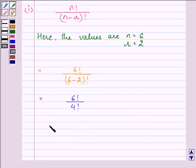Now what we need to do next? We can write 6 factorial as 6 multiplied by 5 multiplied by 4 factorial divided by 4 factorial.